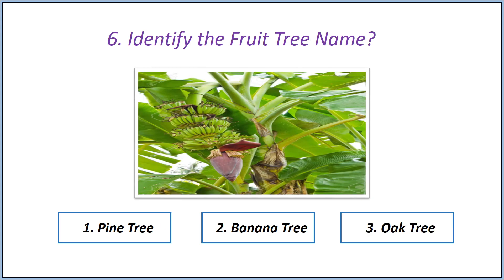Sixth question: identify the fruit tree name. Options — first option: pine tree, second option: banana tree, third option: oak tree. Answer is banana tree.